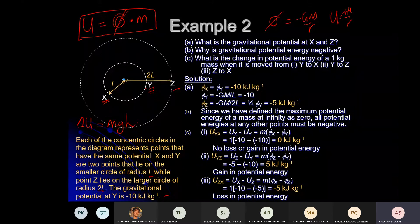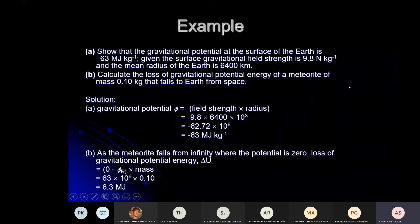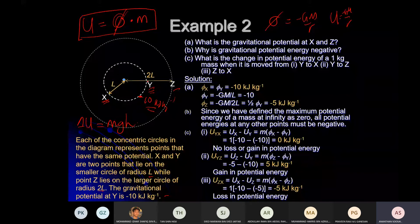Gravitational potential φ_Y = –10 kJ/kg. What do you understand by this? To bring a unit mass from infinity to point Y, the amount of work needed is –10 kilojoules for every kilogram.